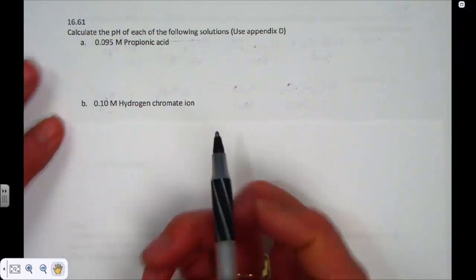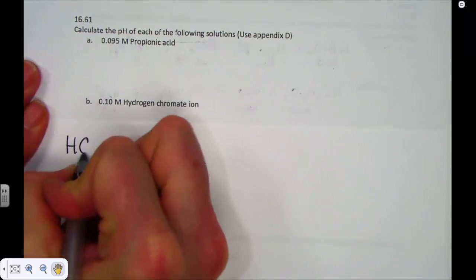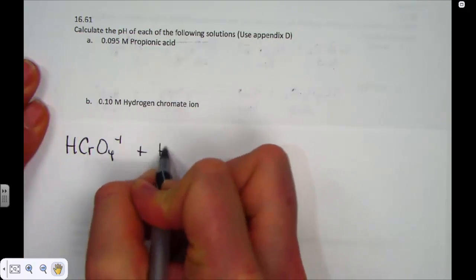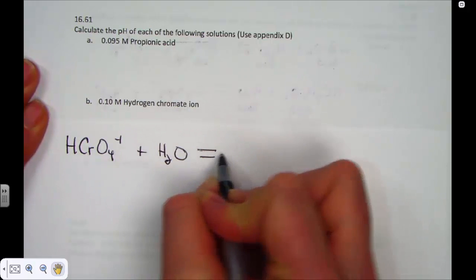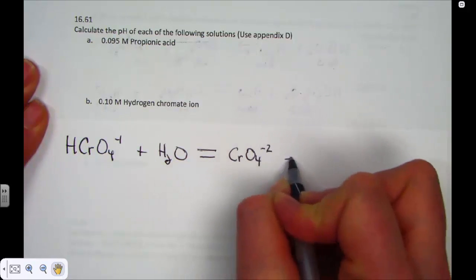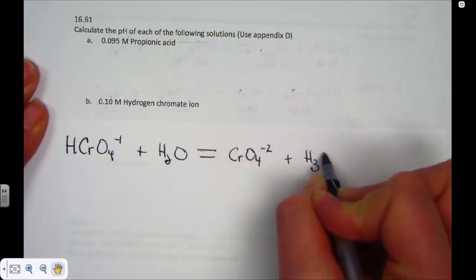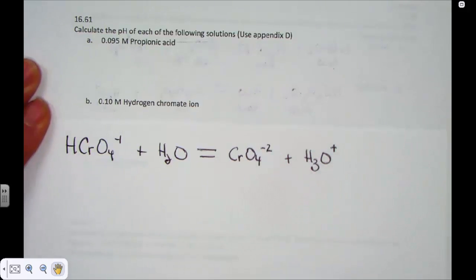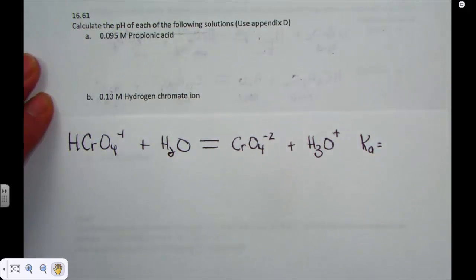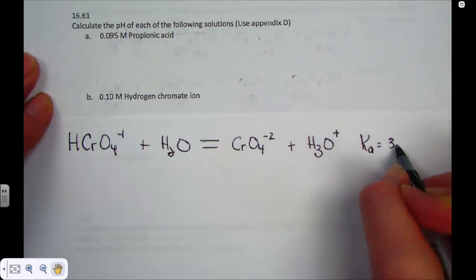Let me get that written down for us. Hydrogen chromate, HCrO4 negative 1, sets up a dynamic equilibrium creating its conjugate base, the chromate polyatomic ion, and the acid ion called hydronium, H3O+. Ka is recorded off of that chart, 3 times 10 to the negative 7th.